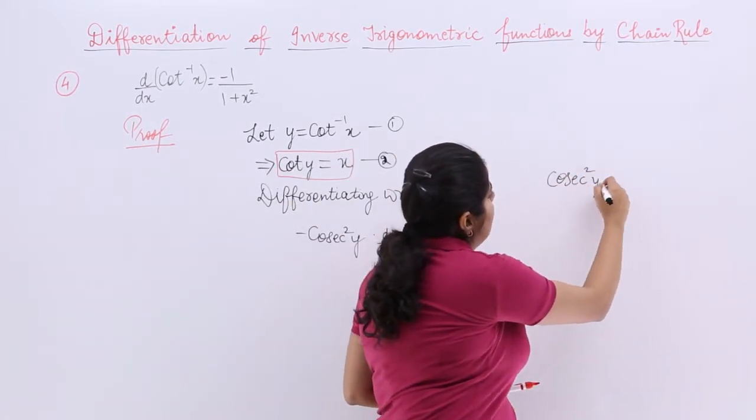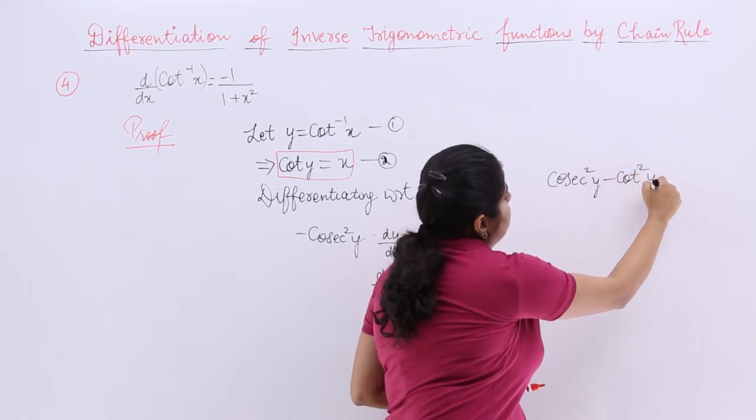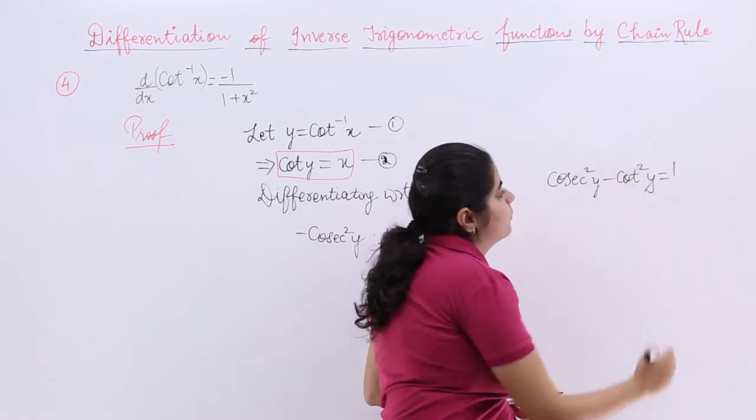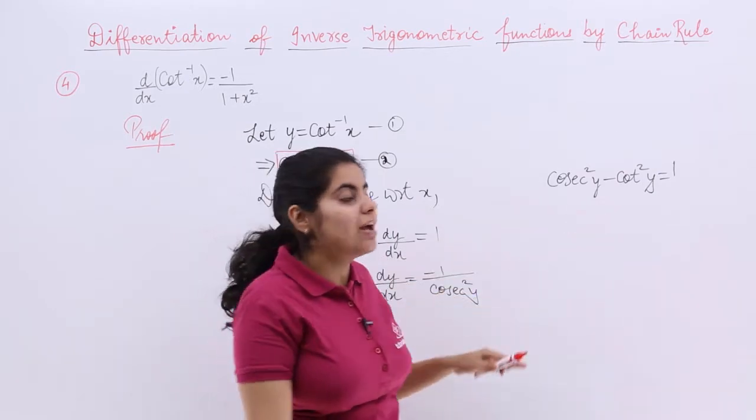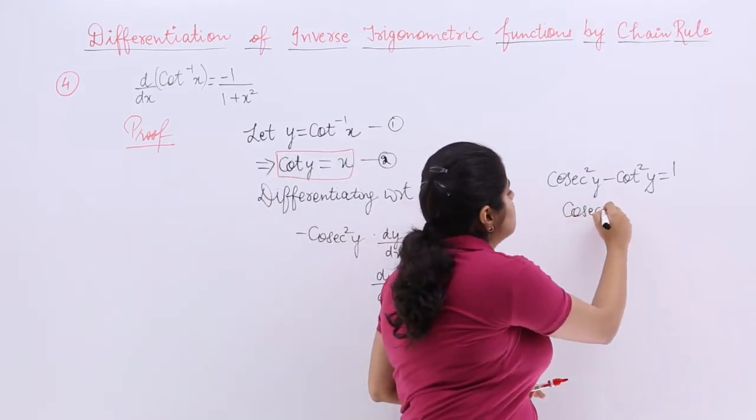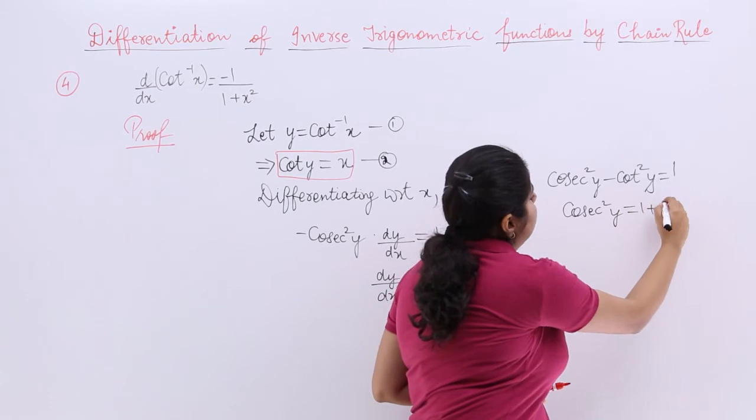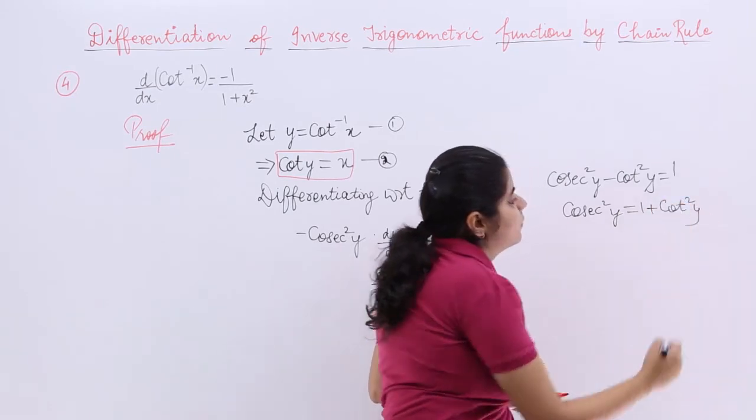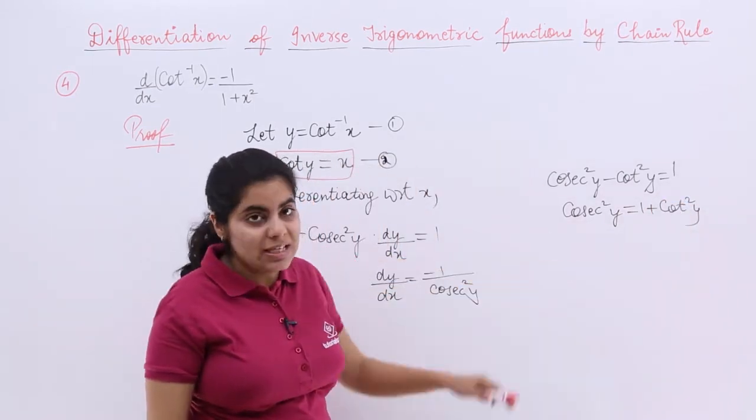Cosecant square y minus cot square y is equal to 1. Now what is cosecant square y value from here? Cosecant square y is equal to 1 plus cot square y. So basically we are going to use this.